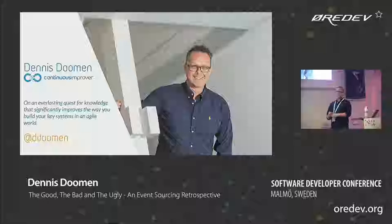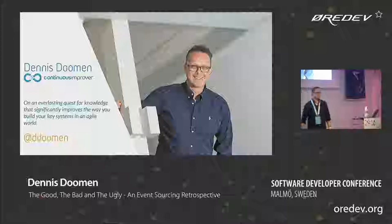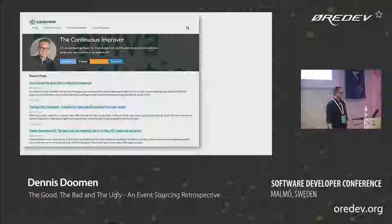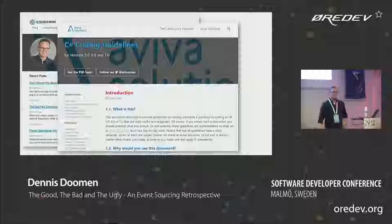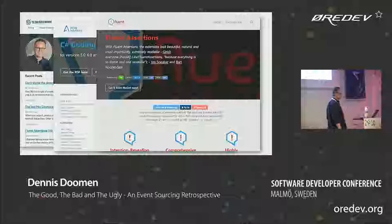I hired a marketing specialist. I read a book, and the book said you had to have a model. So at least this is my Twitter handle, and I call myself the Continuous Improver. I have a couple of open source projects. I have a blog, the Continuous Improver, where I talk a lot about event sourcing and also other topics. I've been publishing coding guidelines for the last 18 years, basically since .NET C# 1.0. Anybody from the .NET space here? You may know Fluent Assertions, which is a small little library, pretty popular these days. Anyway, let's talk about event sourcing.